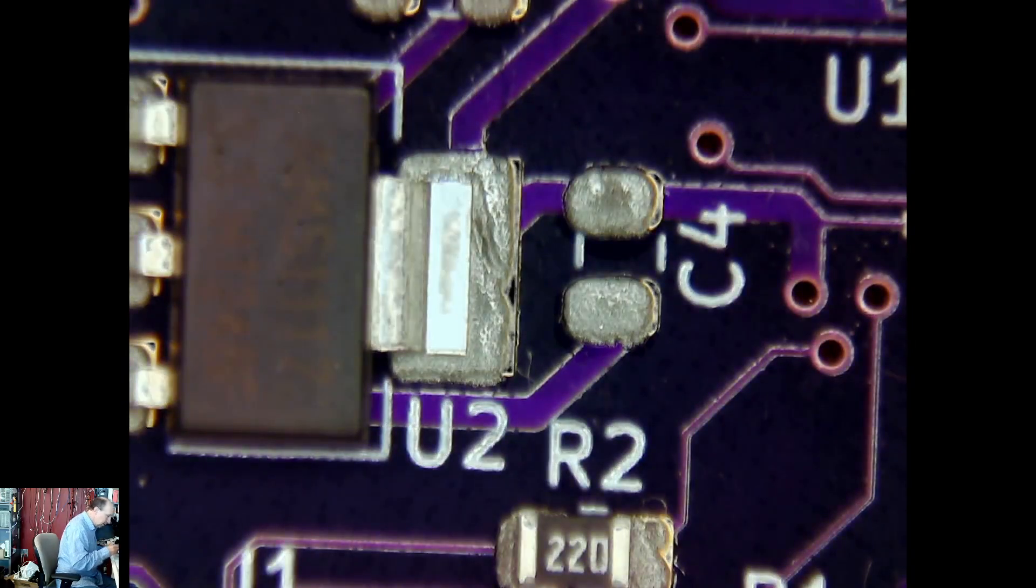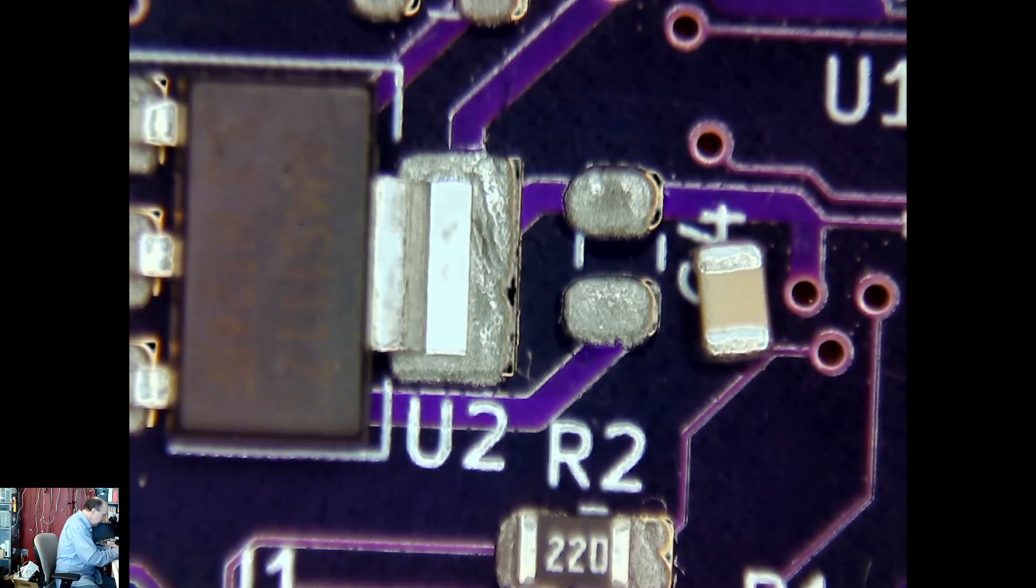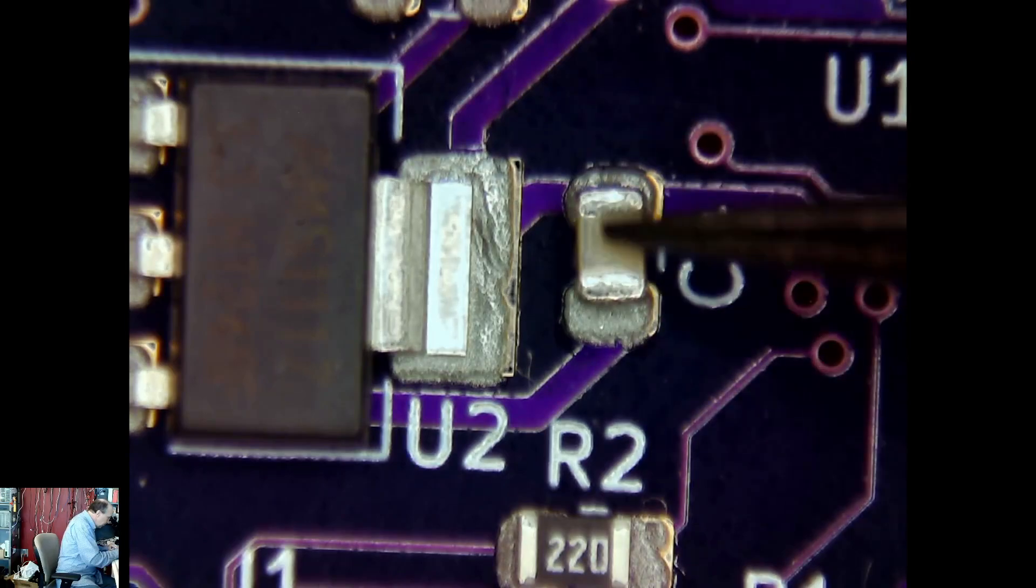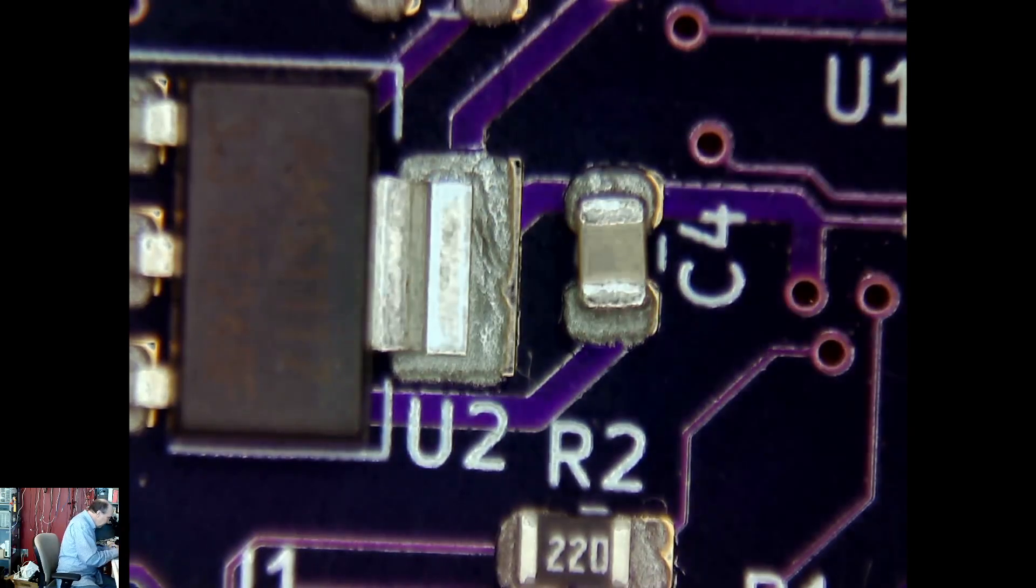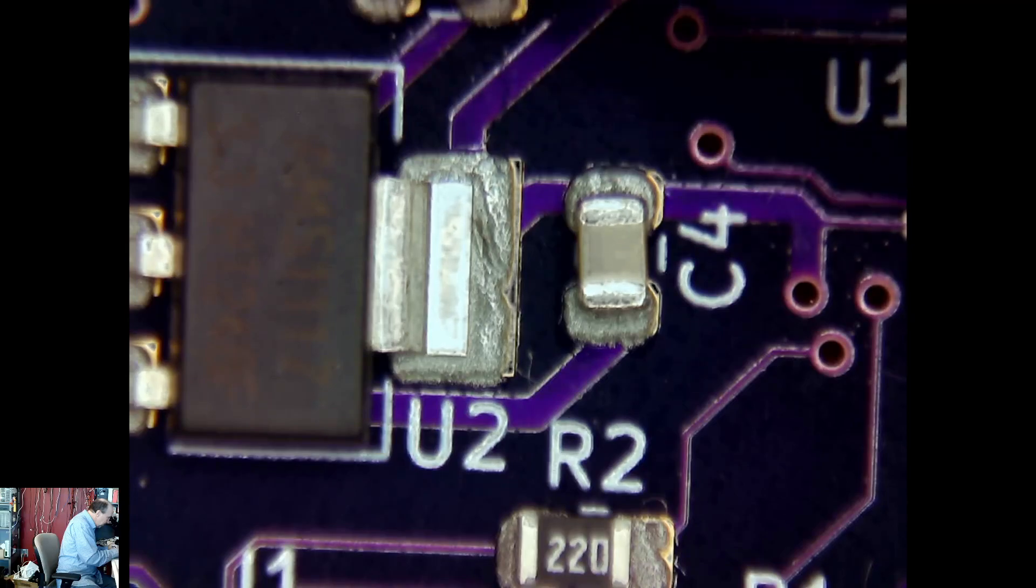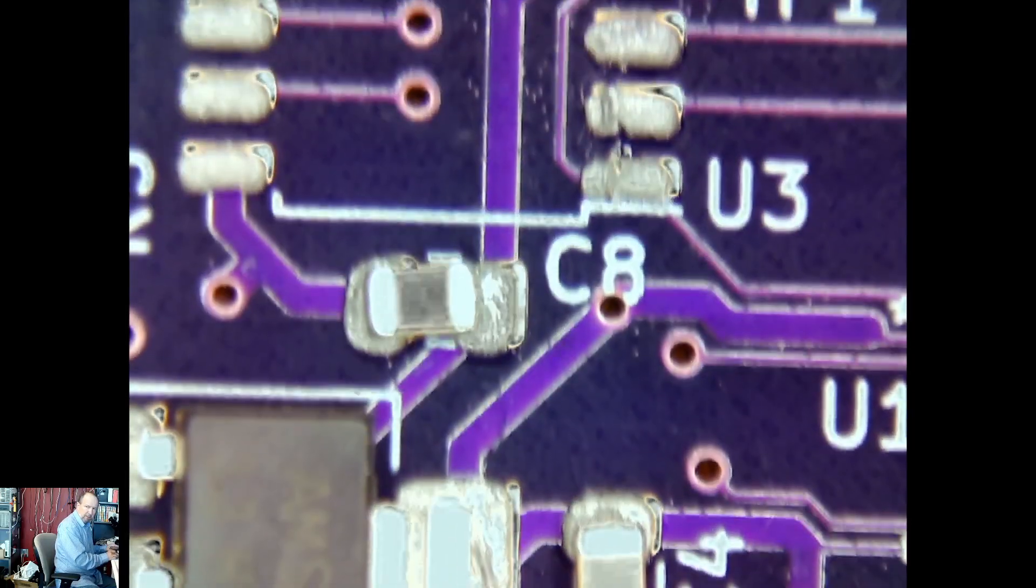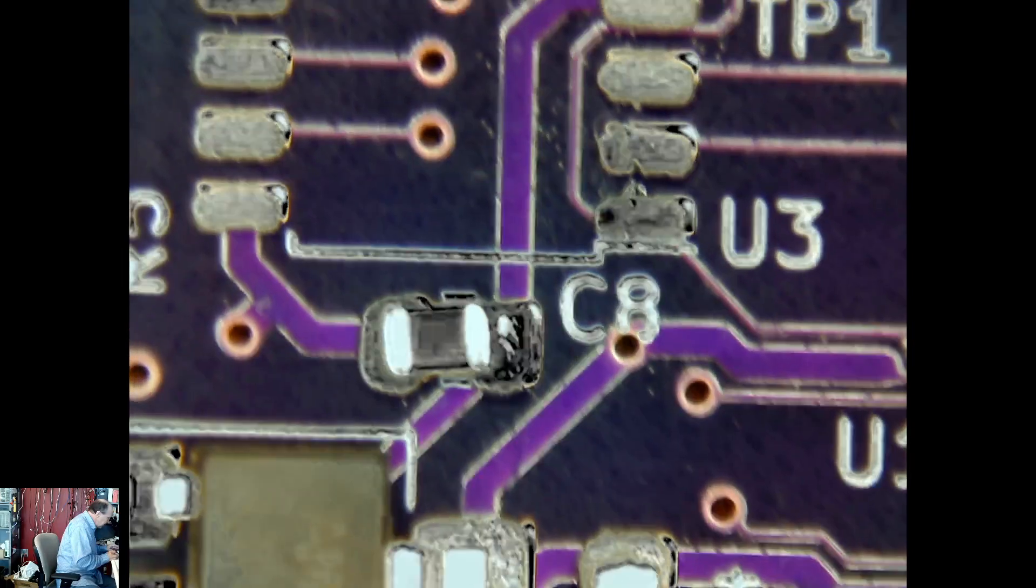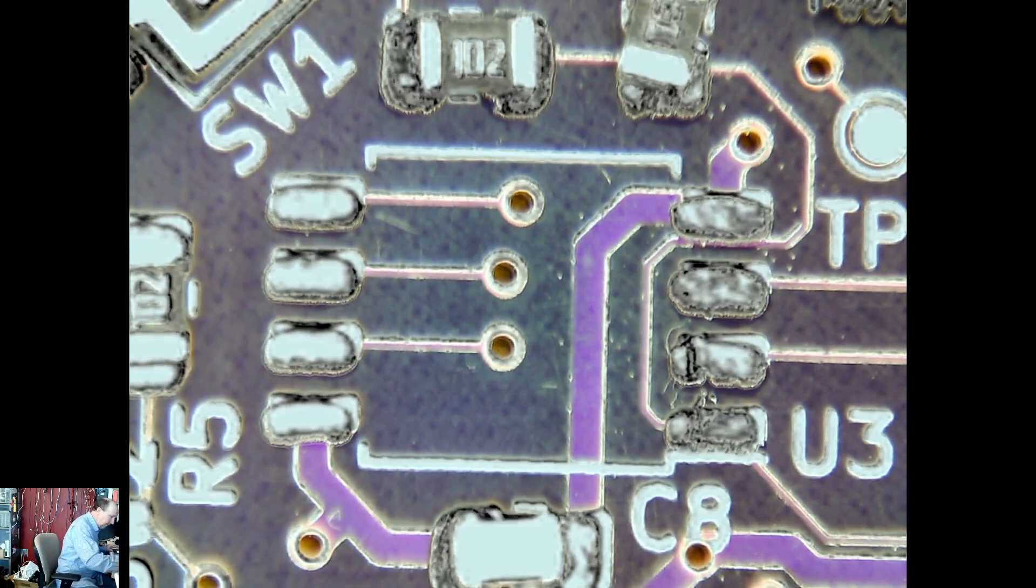C4 is right there. C4 is another 100 nano. C8 is sitting right there, that's the last 100 nano. I'm getting a little off there. U3 is the memory chip and it looks like pin 1 is to the low and to the right. So let's grab that one.